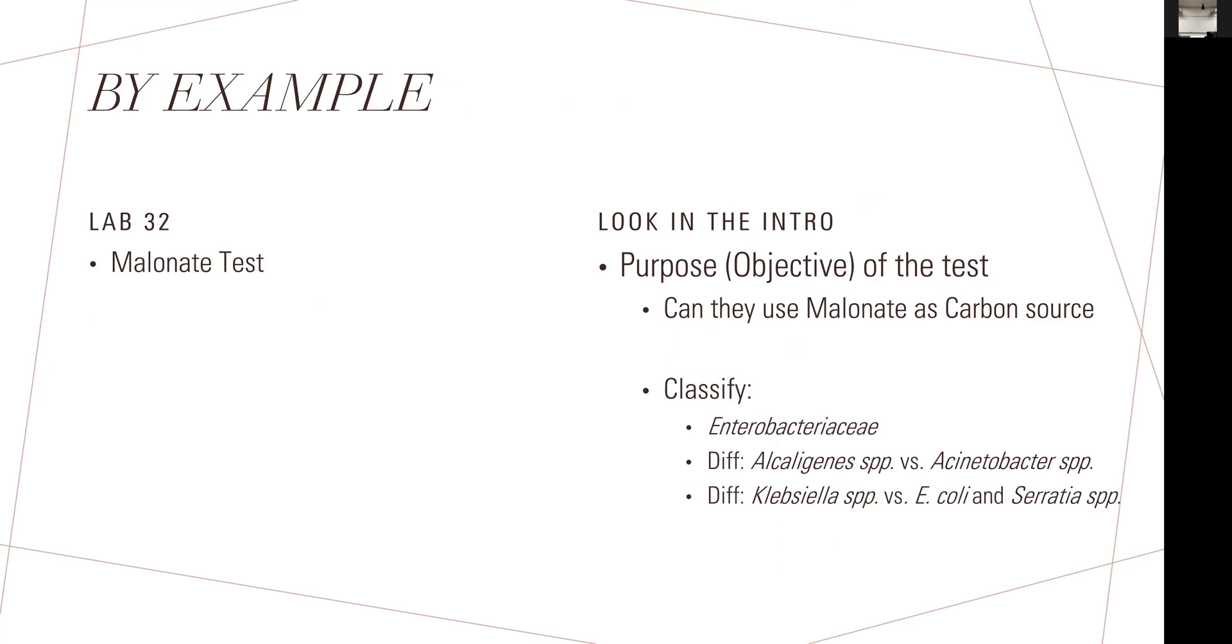As an example, let's look at one we have in our labs. This is my version; everybody's pre-lab will look different because it's all about paraphrasing. Let's focus on lab 32 briefly, which is the malonate test. If you look at that page, right at the first paragraph, you'll find the purpose. It tells you you're searching for organisms that can use malonate as food, as a carbon source. Then as you proceed further, you find the true objective: to differentiate between certain types of enteric bacteria like the Alcaligenes group versus the Acinetobacter group, or Klebsiella species away from Serratia and E. coli species.